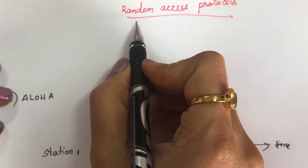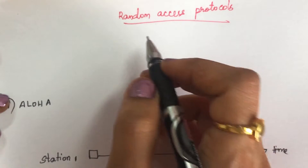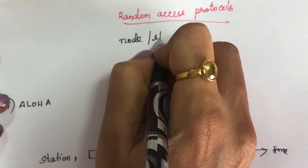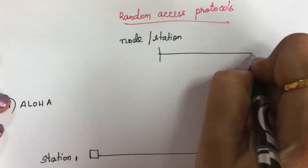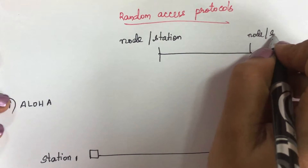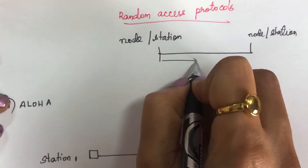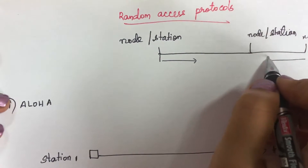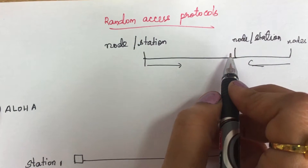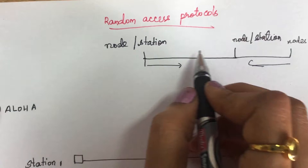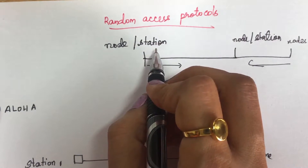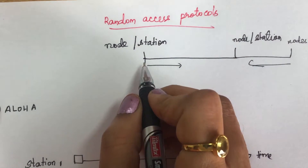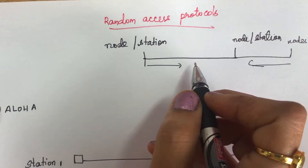Now, first we will see the topic on random access protocol. When a node or station wants to communicate with another node or station, it randomly takes its own time and sends the frame. When two or three nodes share the same common medium, no node is controlled by any other node — any station is not superior to another, and any station with data can send it at its own time.